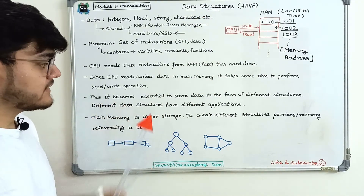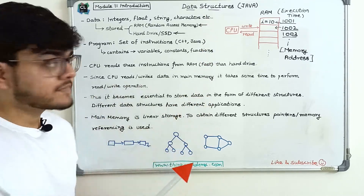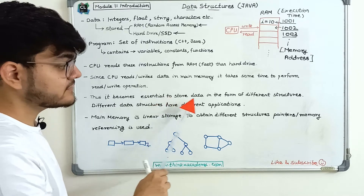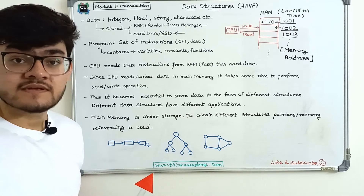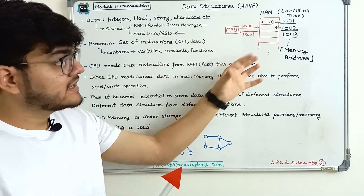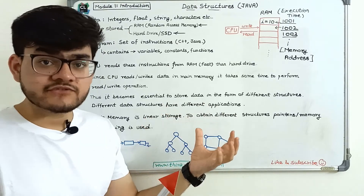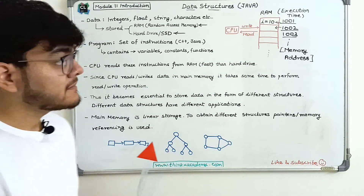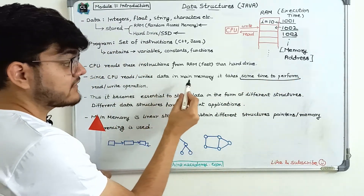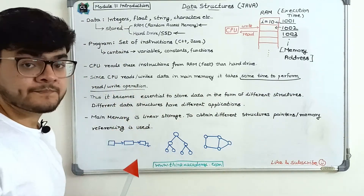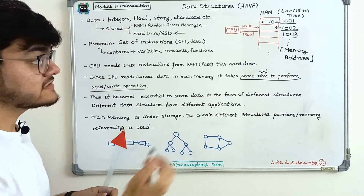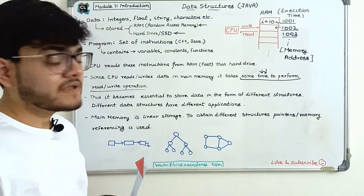It becomes essential to store data in the form of different structures because they have different applications. When solving problems and algorithms, you will require a particular data to be in a particular structure. If the data is in the right structure, it will be easier for the CPU to access RAM. When the CPU reads and writes data in memory it takes some time, so we have to minimize this time to write efficient programs.